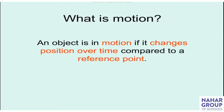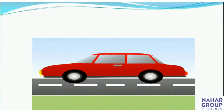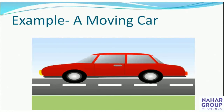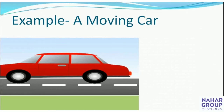Now here is an example of motion: a moving car. This car is moving on a straight road — this is the best example of motion because the car keeps changing its position with respect to time. The car keeps travelling and changing its position, so we can say the car is in motion.